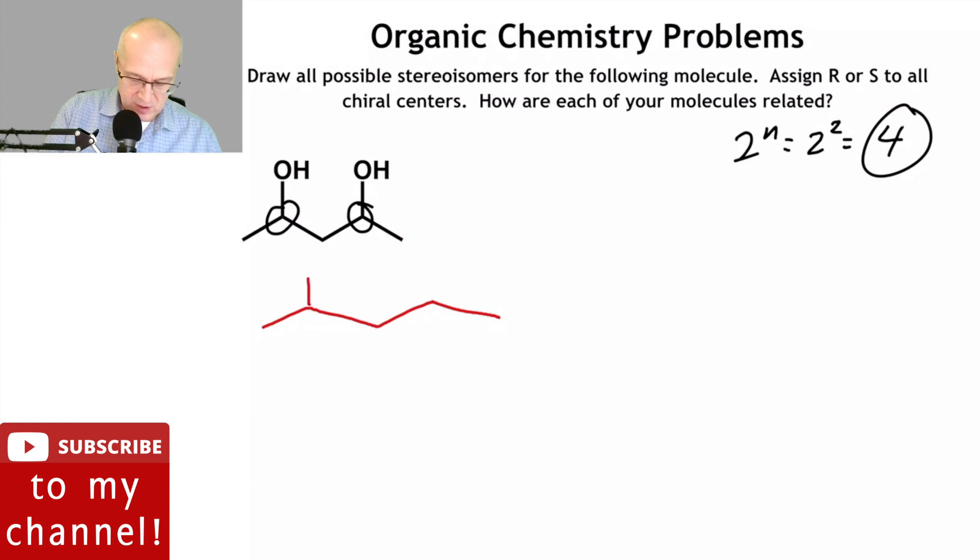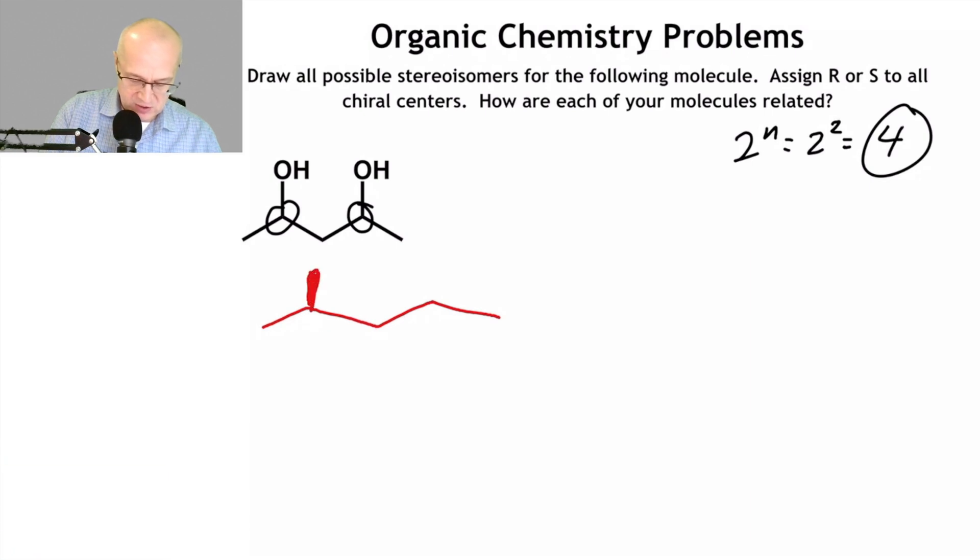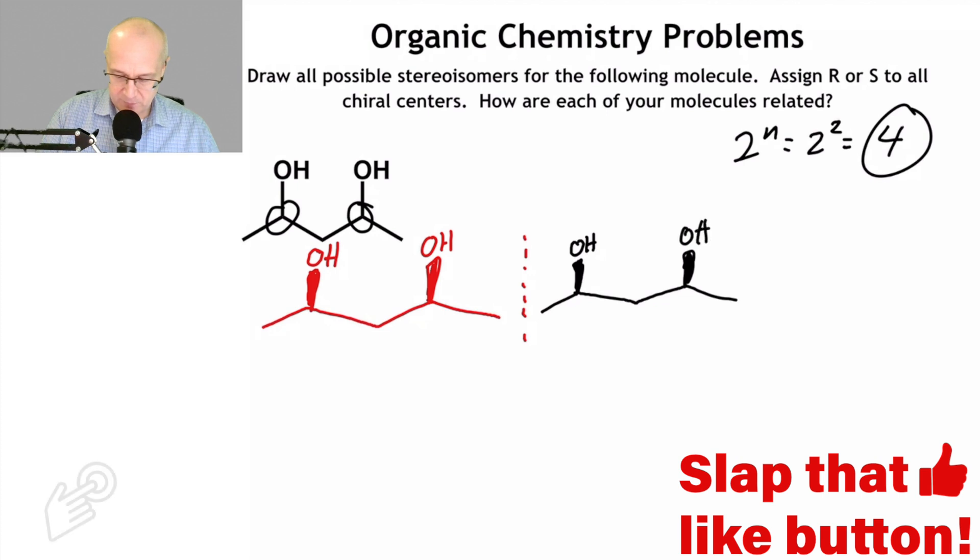So again, just draw the stereochemistry in because there's nothing shown. There's nothing shown in my original molecule. I can assign whatever stereochemistry I want to these centers and build from there. So let's draw that mirror image real quick. OH there, and we'll put an OH here. So now I think what... hold on now, wait a minute.